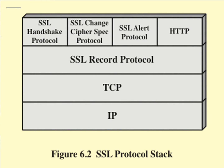Here is the SSL protocol stack. We'll talk about those top four: the Handshake protocol, the Change Cipher Spec protocol, the Alert protocol, and then HTTP — which we'll talk about in the next lecture as HTTPS if it's using SSL. Then there's the SSL record protocol, and then you see that this is over TCP and IP down at the lower layers.